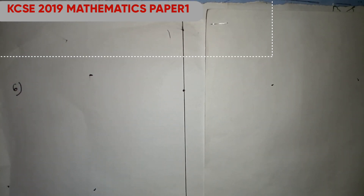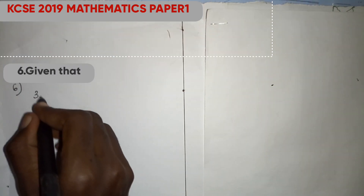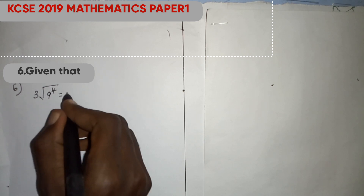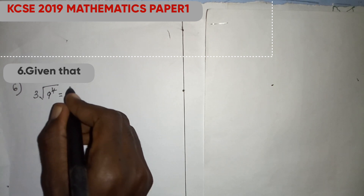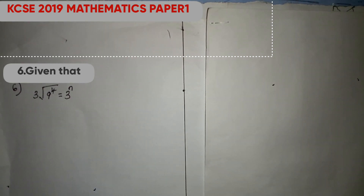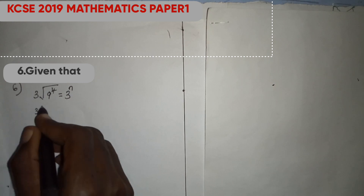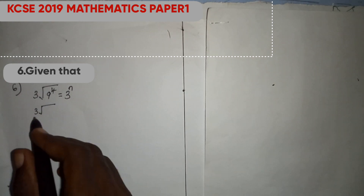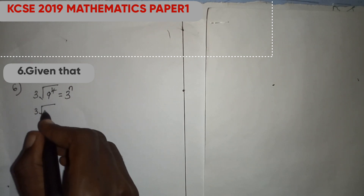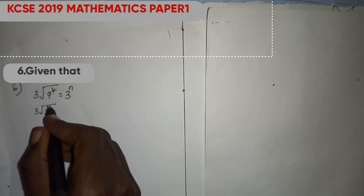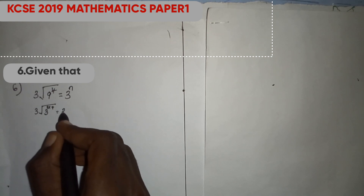Question six says: given that nine power four is equal to the cube root of three power n, find the value of n. We know that we can write nine power four in base three. We can say nine equals three squared, so we write this as three power two, times four, which equals three power n.